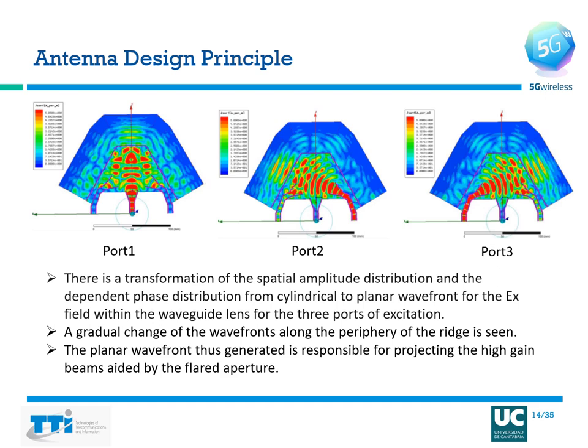As an illustration of the antenna principle, this slide shows the three antenna ports that are excited and the corresponding phase and amplitude distribution that propagates through the antenna. There is a transformation of the spatial amplitude distribution and the dependent phase distribution from cylindrical to planar at the peripheral interface of the ridge for port 1, port 2, and port 3. As soon as the waves hit the ridge, a transformation takes place from cylindrical to planar, giving rise to high gain, further aided by the flared aperture.